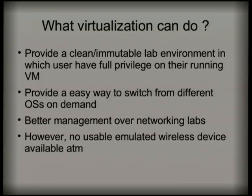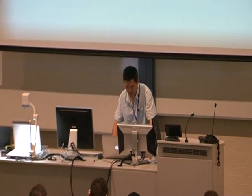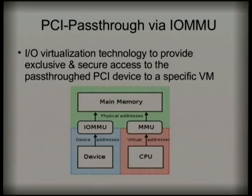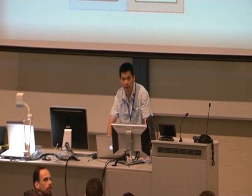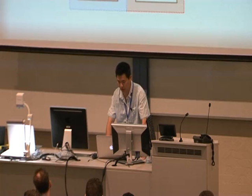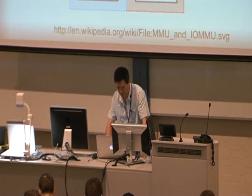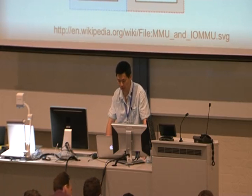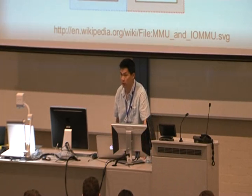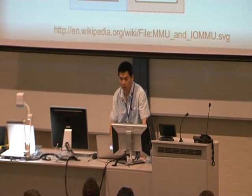As James mentioned before, we have a tricky problem with how we handle the wireless network cards used in the networking labs. The way we do it is to pass through the physical PCI devices to the virtual machine directly. In order to do this in a fully virtualized virtual machine, we need some special hardware features built into modern computers. This is called IOMMU — the I/O Memory Management Unit. It is similar to the traditional memory management unit in that it translates the device-visible address to the physical memory address.